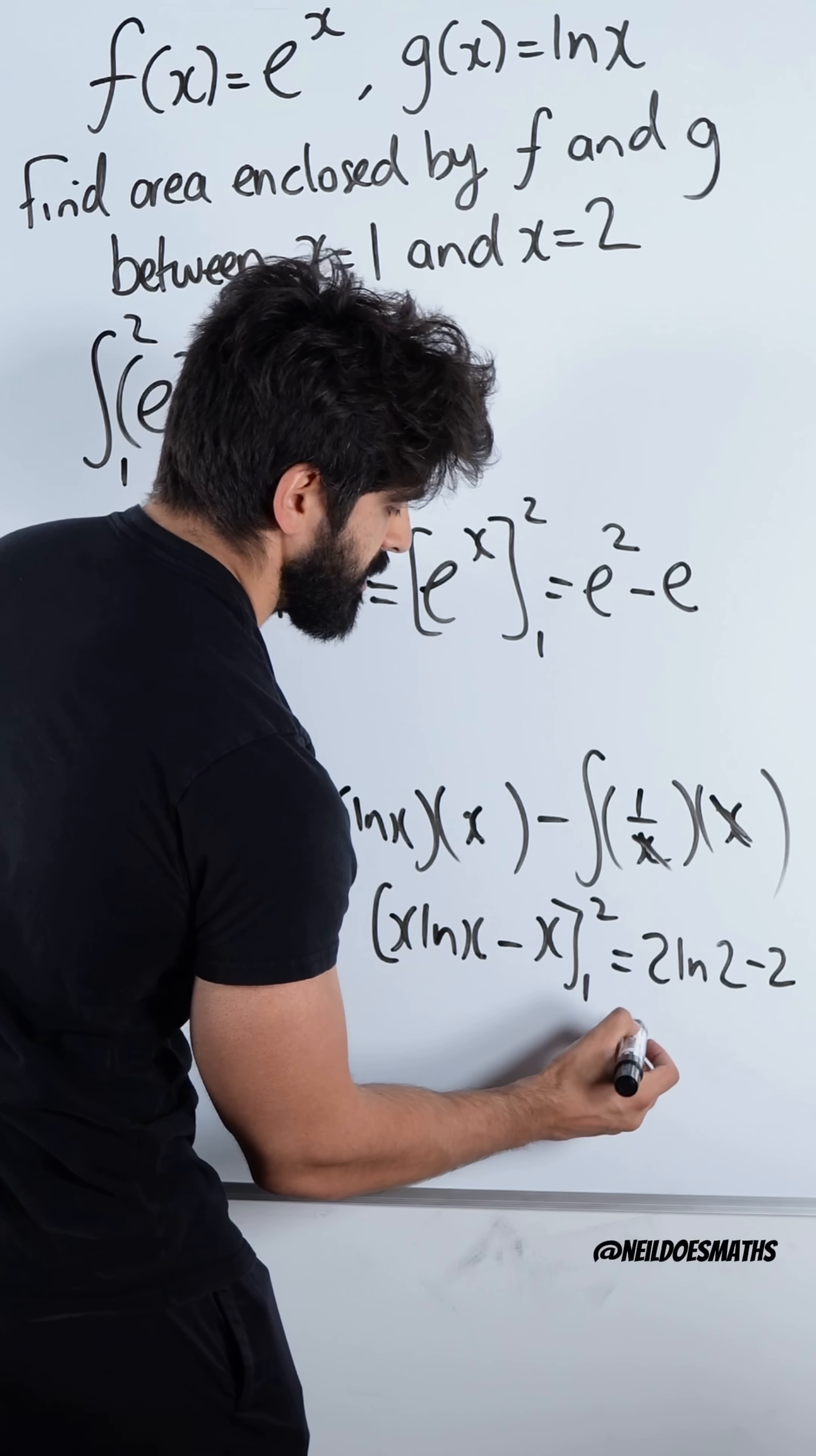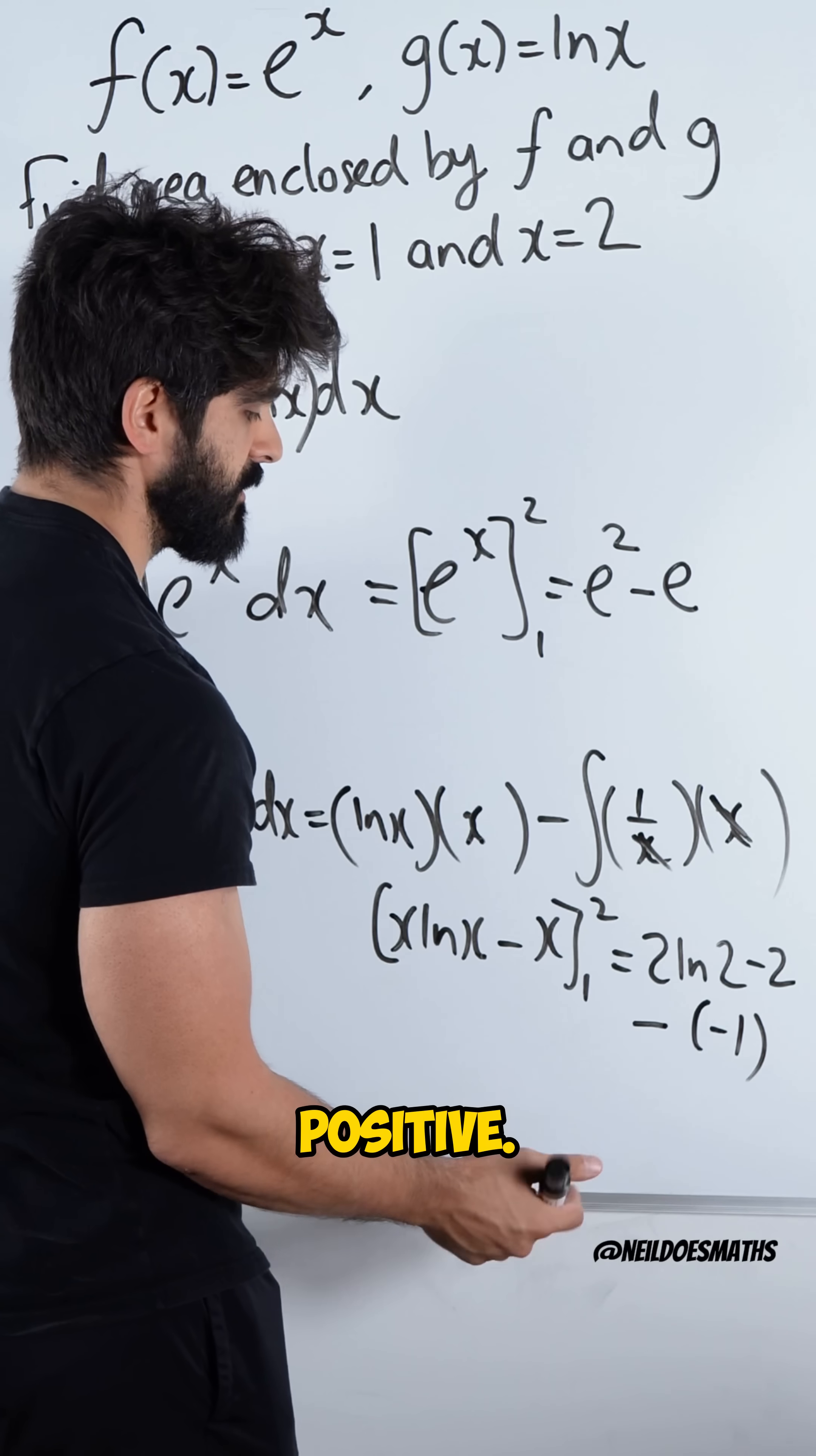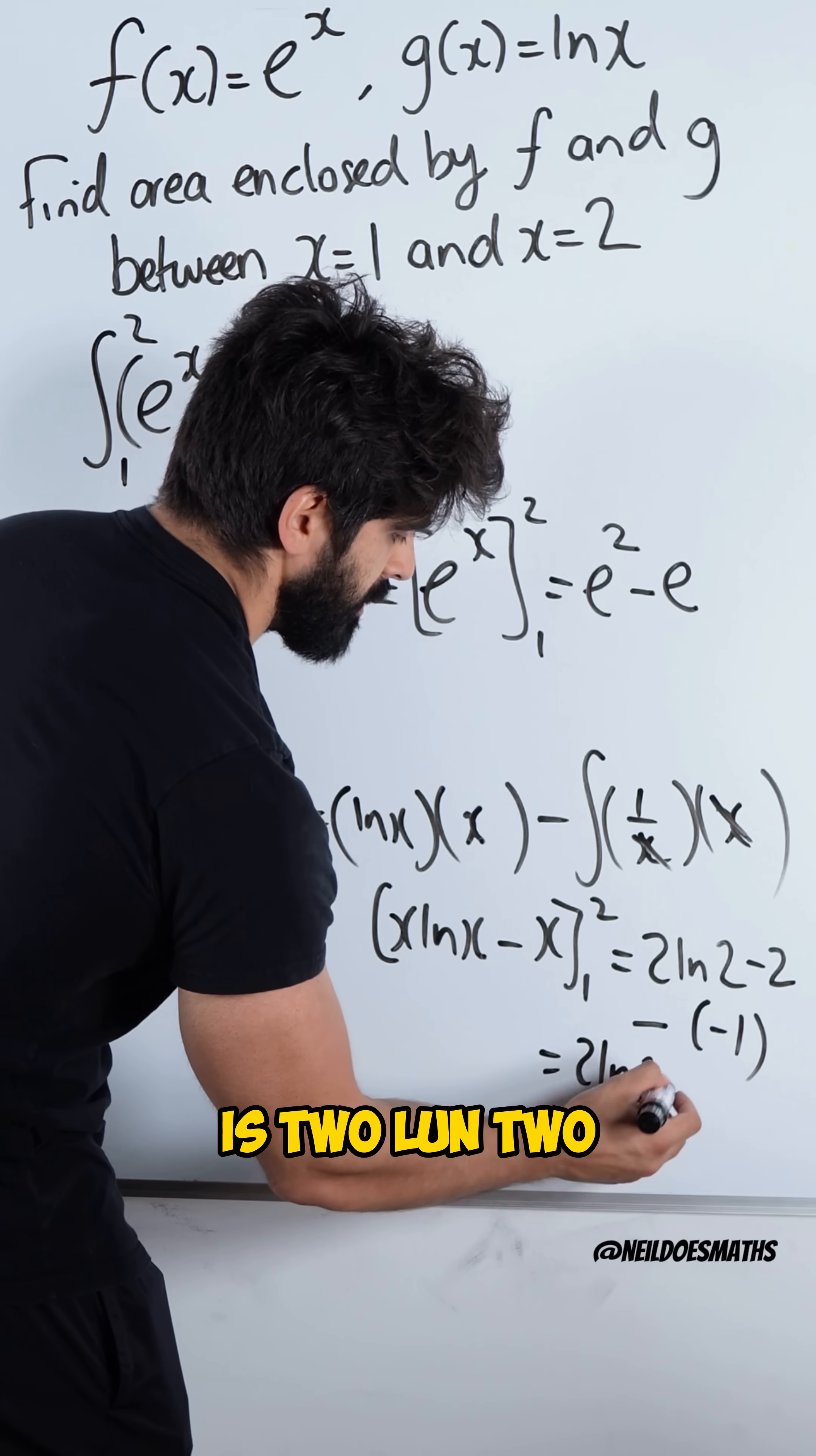So we get this, subtract, minus 1. Well, two negatives is positive. So we get 2 ln 2 minus 2 plus 1, which is 2 ln 2 minus 1.